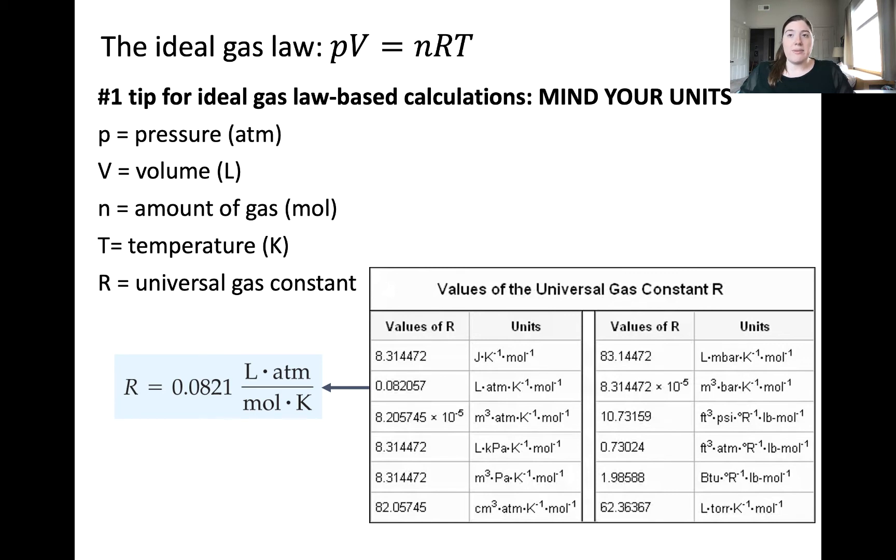While pressure, volume, and temperature can be described using a variety of different units, the units I'm showing in parentheses here are required based on the units chosen for the universal gas constant, R. Said another way, if I use this value of R with units of liter times atmosphere over moles times Kelvin, this necessitates reporting the pressure in atmosphere, the volume in liters, the amount of gas in the sample in moles, and the temperature of the gas sample in Kelvin.